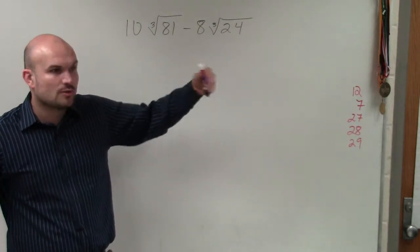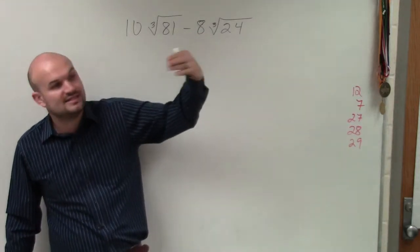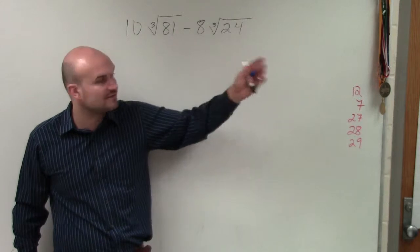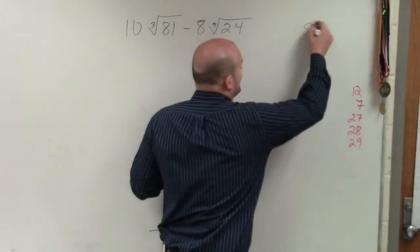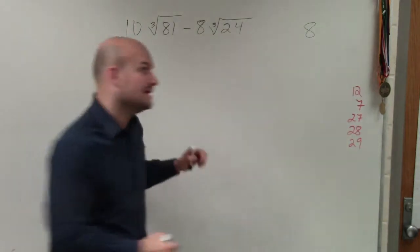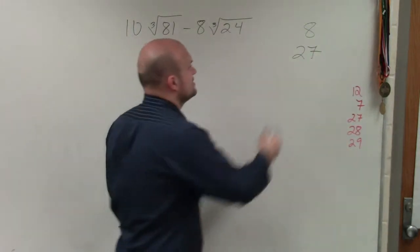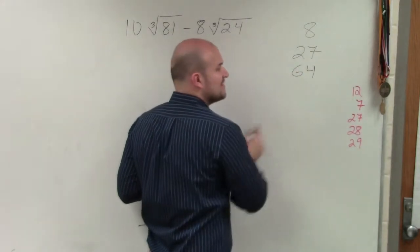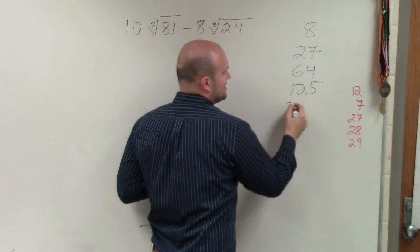So we know some squared numbers, right? 4, 9, 16, 25, 36. Those are all numbers you can take the square root of. Well, what are some cubed numbers? 2 times 2 times 2 is 8. 3 times 3 times 3 is 27. 4 times 4 times 4 is 64. 5 times 5 times 5 is 125. And 6 times 6 times 6 is 216.